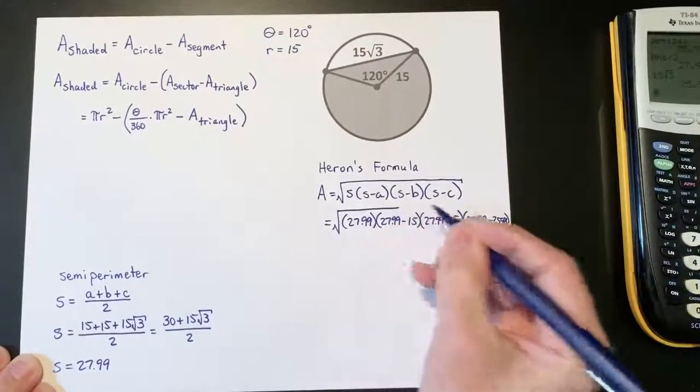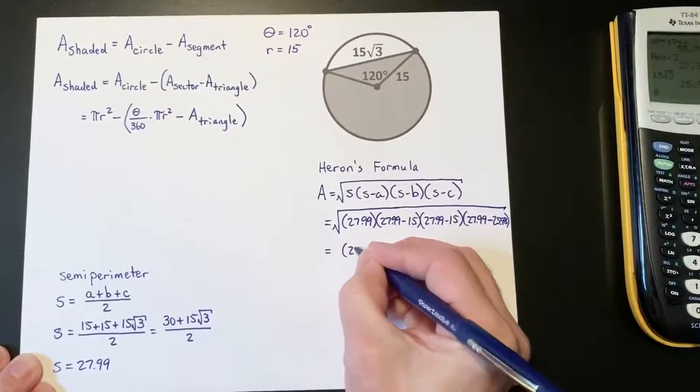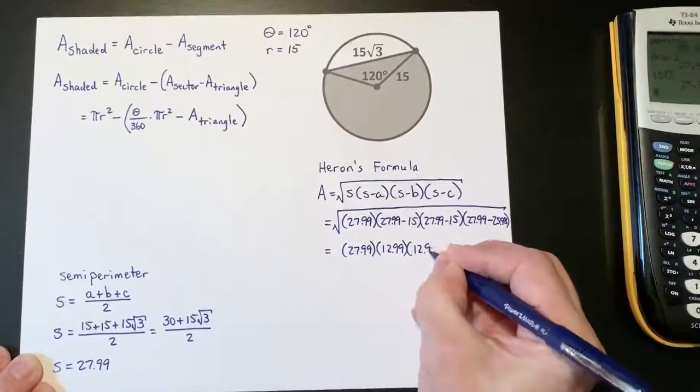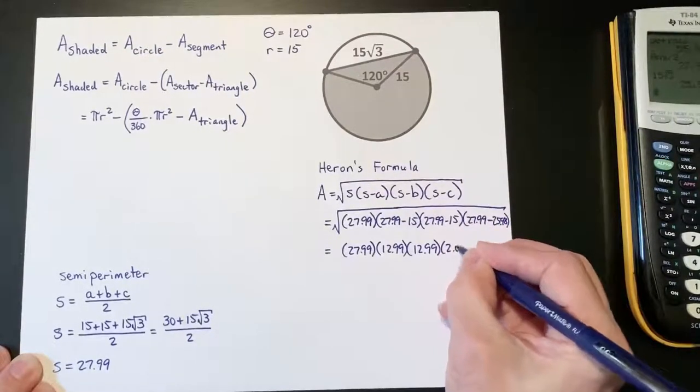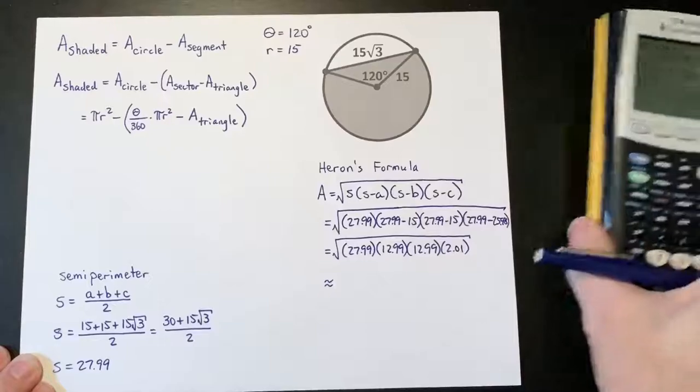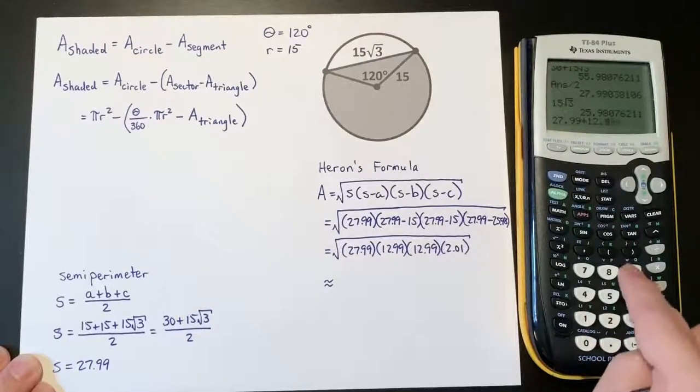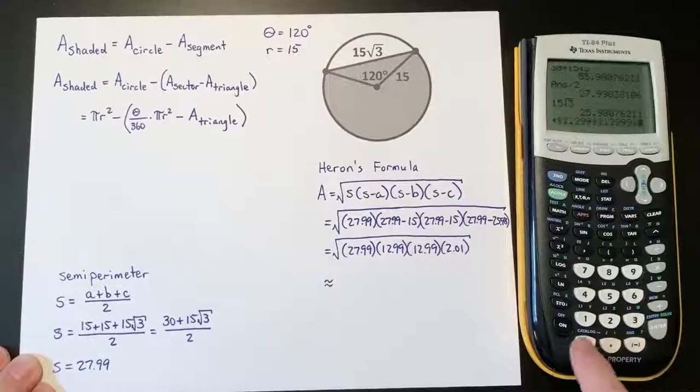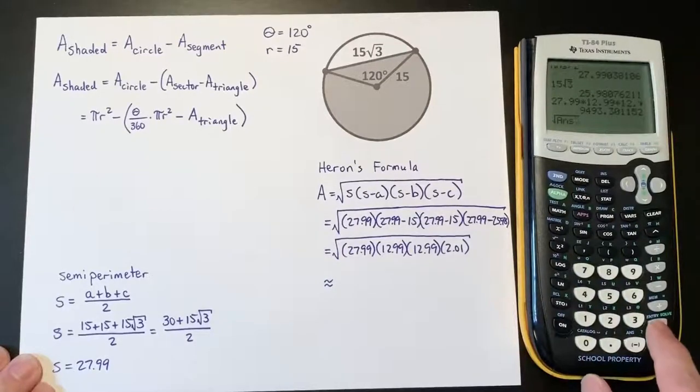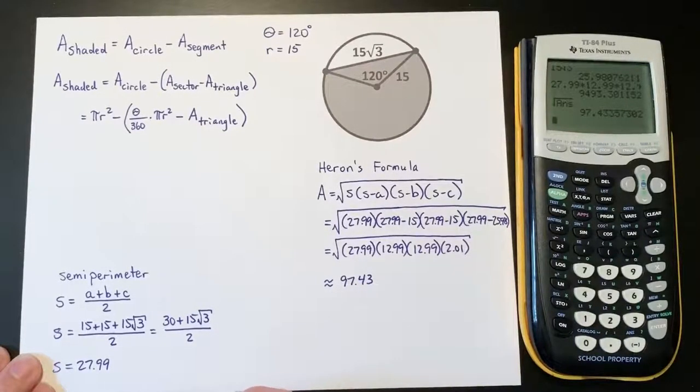And all this is underneath our square root. So this becomes 27.99 times 12.99 times 12.99 times 2.01, all under the square root. Now if I type that in, we get 27.99 times 12.99 times 12.99 times 2.01, and then I'm going to take the square root of that answer and it gives me about 97.43.